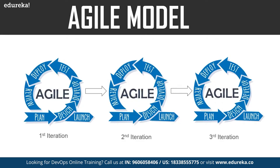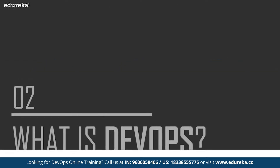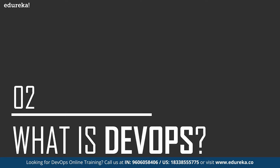While the agile model brought agility to the development team, the operations team still did not come up to speed with the development team. Because of this, there was constant conflict between the development and operations teams, which hampered the pace of software development and release. This was the biggest drawback of the agile model, and the next approach is DevOps.